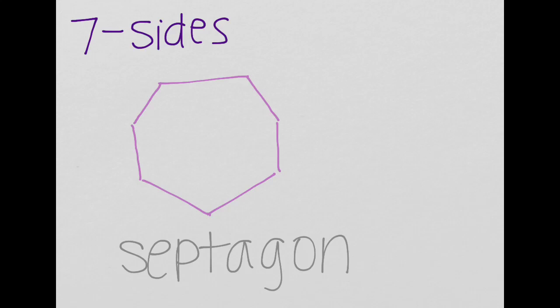Now we have septagon. We have one, two, three, four, five, six, seven sides. And you guessed it, sept or septa means seven.